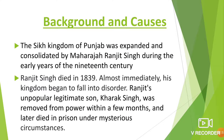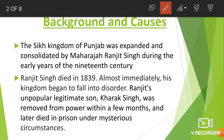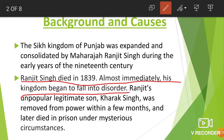The Sikh kingdom was expanded and consolidated by Maharaja Ranjit Singh in the early years of the 19th century. He died in 1839 and almost immediately the kingdom began to fall into disorders. Ranjit Singh's unpopular legitimate son Khadak Singh was removed from power within a few months and later died in prison under mysterious circumstances. That left Dalip Singh, who was very small at the time. His mother Jindankar was made the regent.